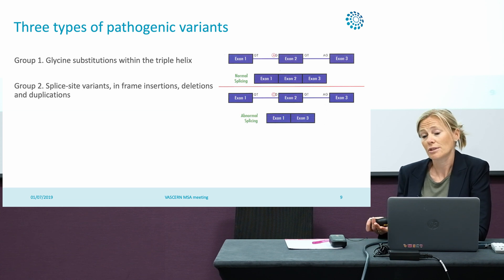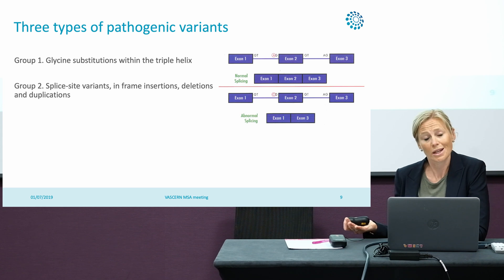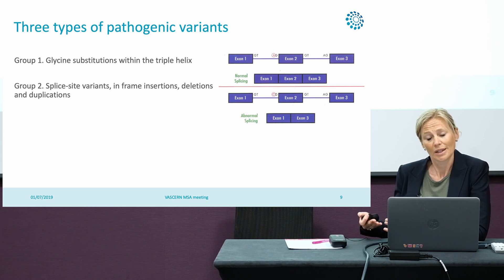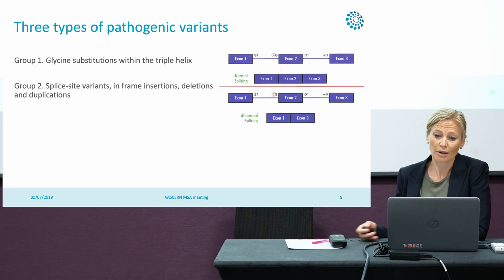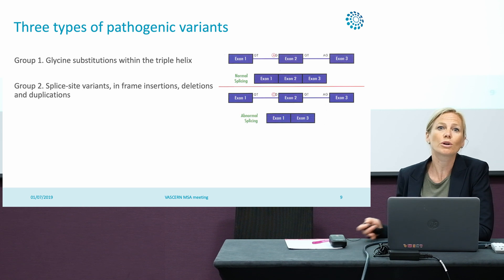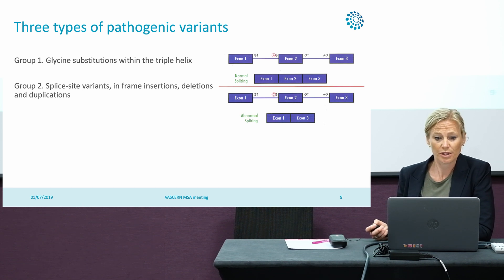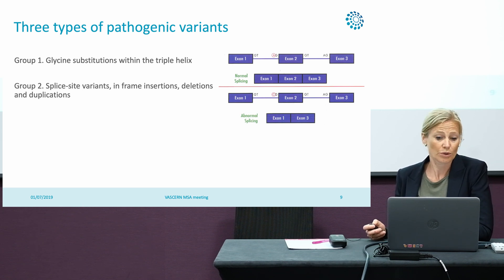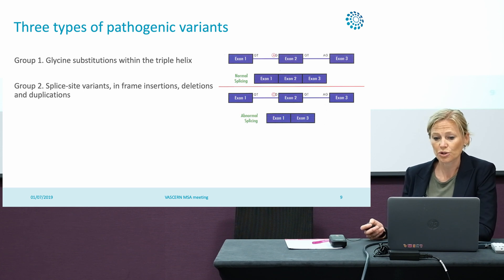An exon can be spliced out, or extra exons can be put into the protein. So we have a longer or a shorter protein with these variants. And the same is true for the in-frame insertions, deletions, or duplications.